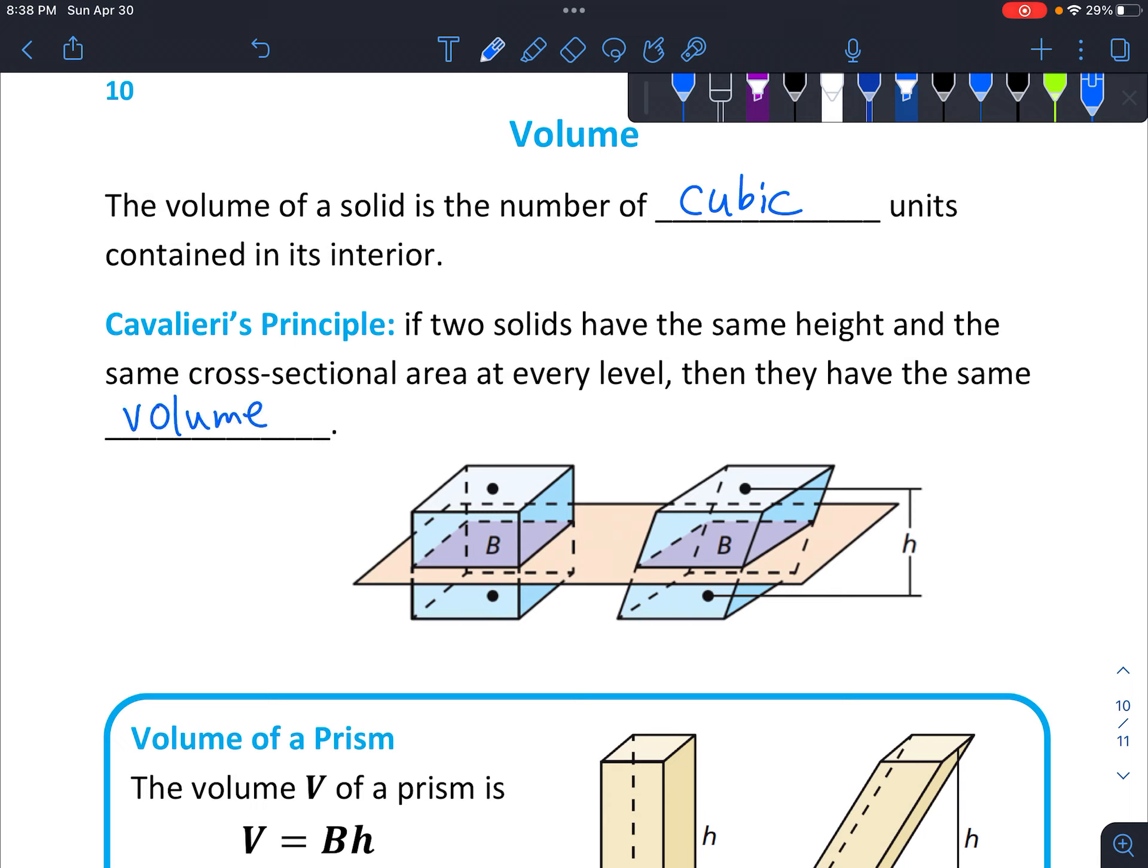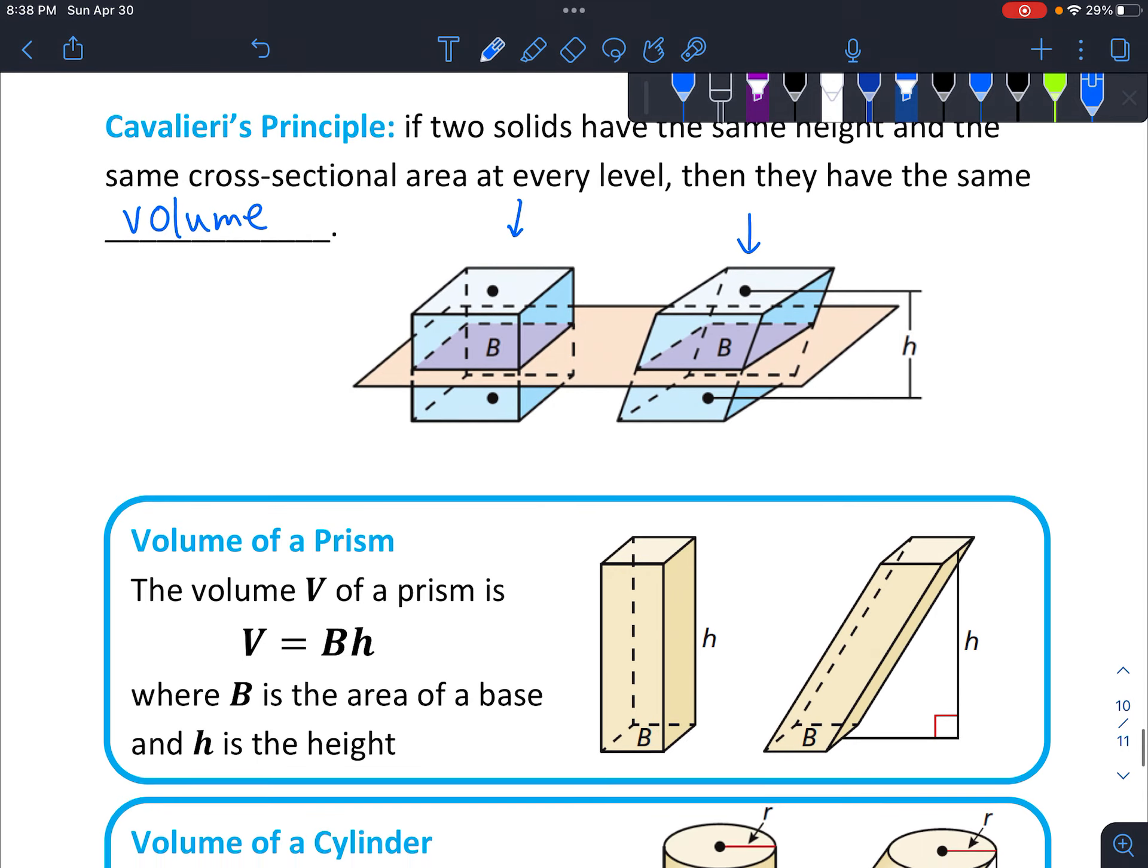I always kind of imagined this as being like a deck of cards. Imagine you've got this deck of cards all perfect and straight, like when you first get out of the box. But then you kind of slide it over a little, and technically it looks different, but the actual space that the cards take up hasn't changed. It just sort of slid over a bit. I think that's one way to kind of visualize it.